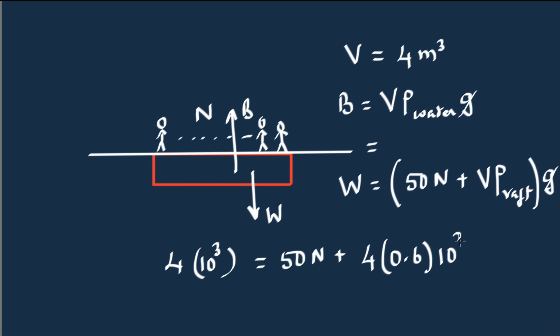Multiplied by the density of the raft, which is 0.6 times the density of water. So we have 4000 here, and bring this term to the other side: minus 2400 is equal to 50 times n. So 1600 divided by 50, n is equal to 32. So 32 students can safely stand on the raft. That's the maximum number. Let's move on to the next problem.